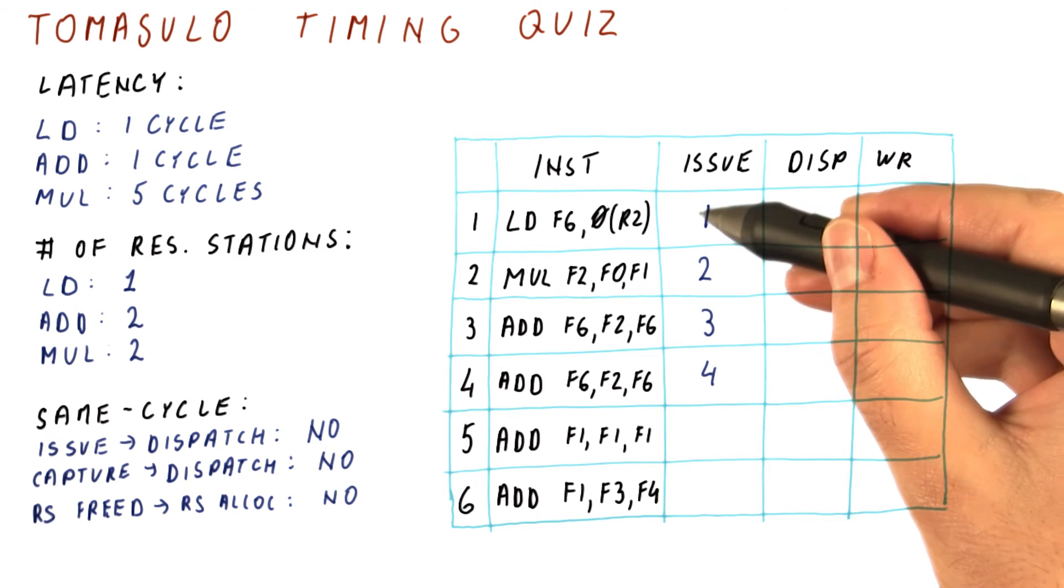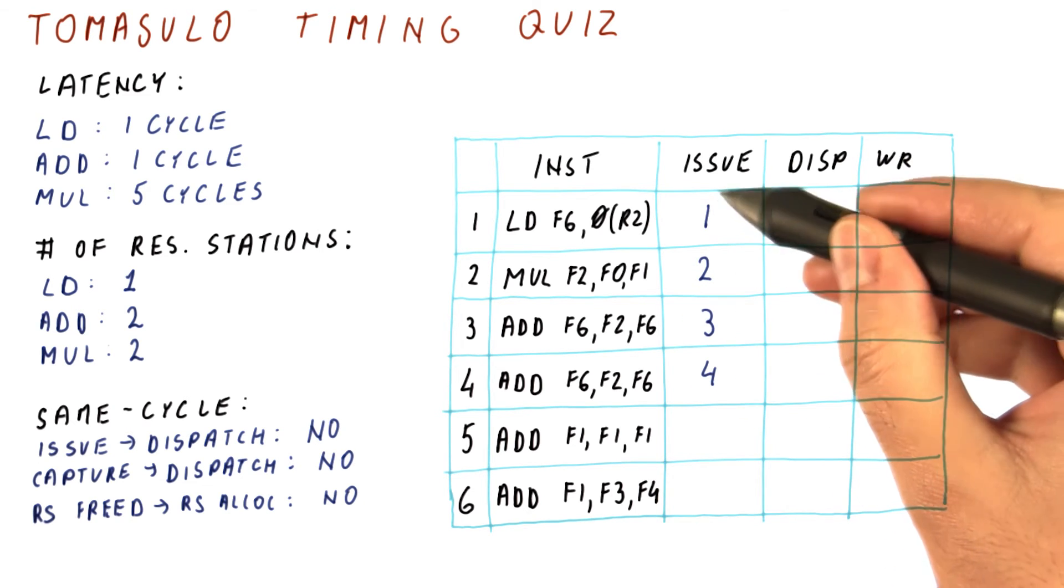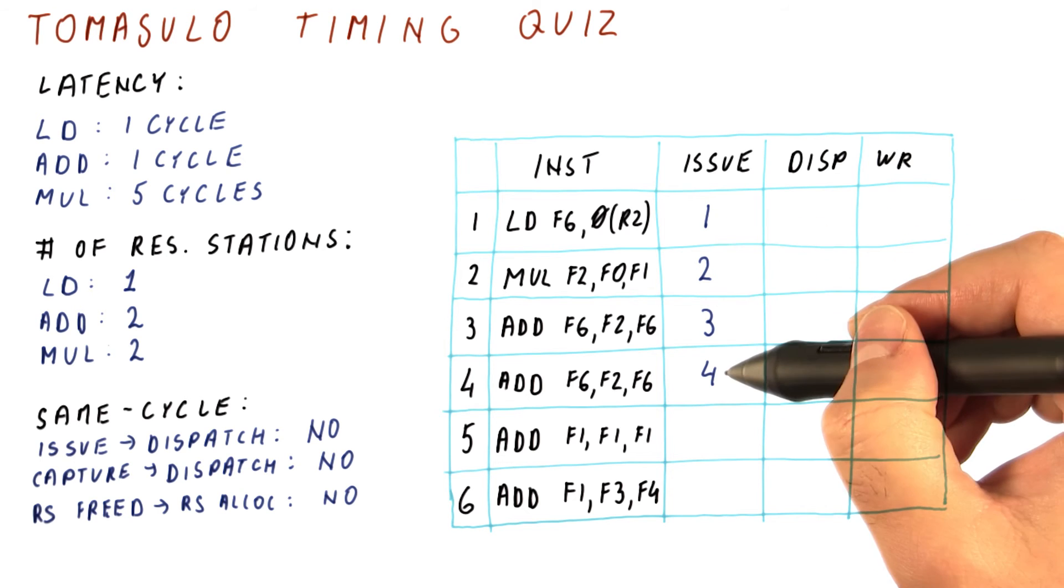To get you started, these four instructions will issue in cycles one, two, three, and four.